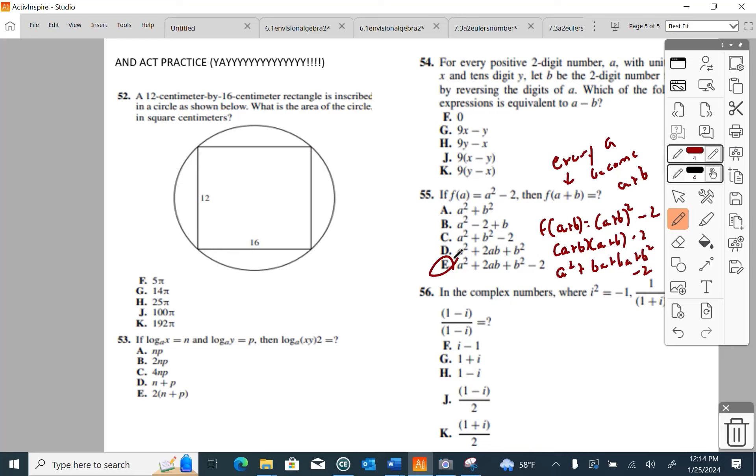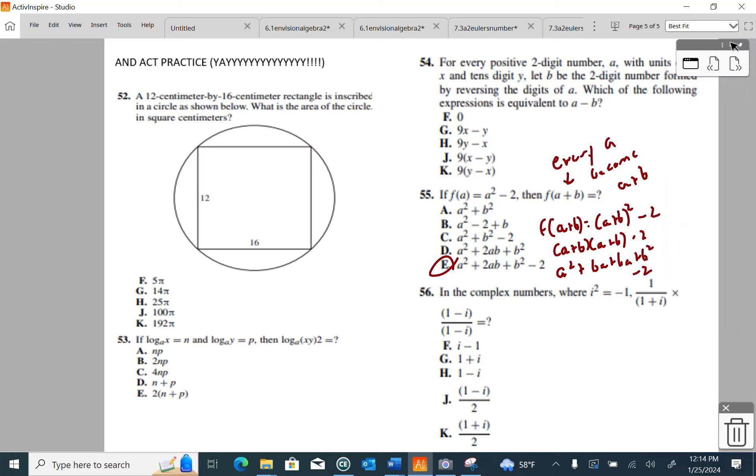56, in the complex numbers where I squared is negative 1, what is 1 over 1 plus I times 1 minus I over 1 minus I? Hopefully, what you realize is that this guy and this guy are conjugates. You can also push buttons on TI-84, but I'm still trying to teach you how to do things by hand. The old ways have not died yet. And as long as I happen to teach, they won't die.